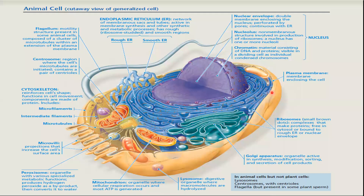The outermost layer of an animal cell is the plasma membrane, and its function is to allow transportation of substances in and out of the cell. As you have already read in the previous chapter about the semi-permeability of the plasma membrane — this is the outermost layer in the animal cell, and in a plant cell it is inner to the cell wall.